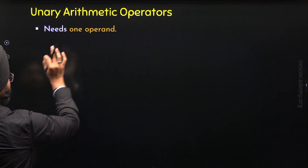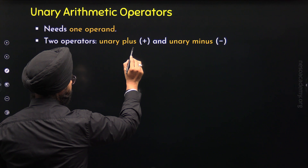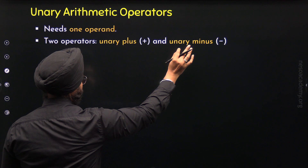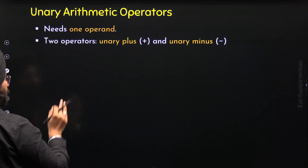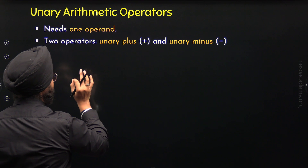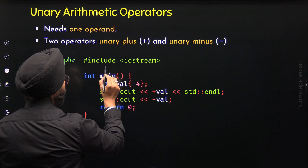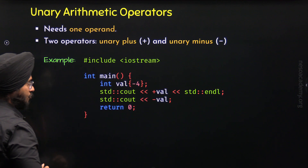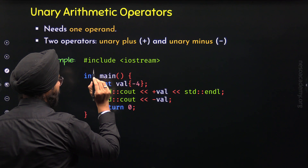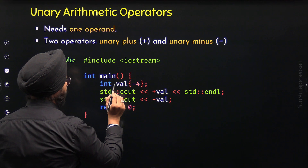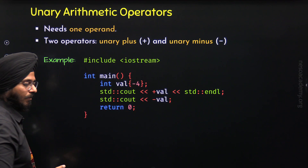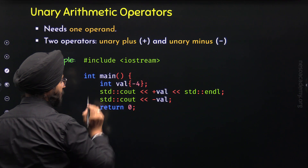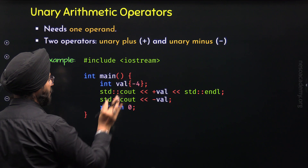There are two types of unary arithmetic operators: we have unary plus and unary minus. Let's understand how to use these operators in C++ programs. For this purpose, we will take a simple example program in C++. Here, I have included the iostream header file because I want to use std::cout in this function. I have defined the main function, and in this main function I have defined this variable val of type int. This means this variable can hold an integer value. I have initialized this variable with value minus 4.